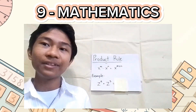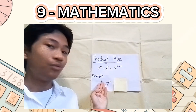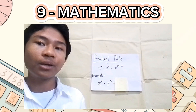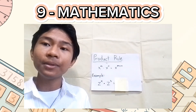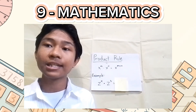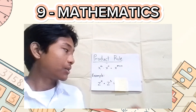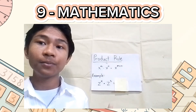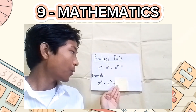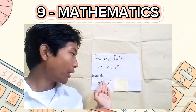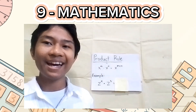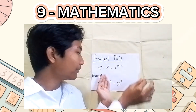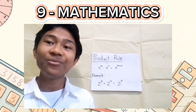Let's try to solve an example. Here we have z raised to 4 times z raised to 5. Like what I said earlier, we will simply just add up the exponents of the same variable. Since they have the same variable z, we will just copy the variable z and then add up the exponents. So 5 plus 4 is equal to 9, so the correct answer is z raised to 9.